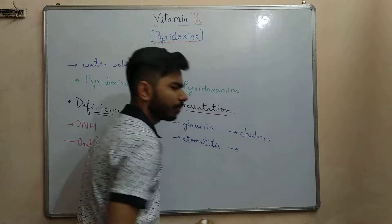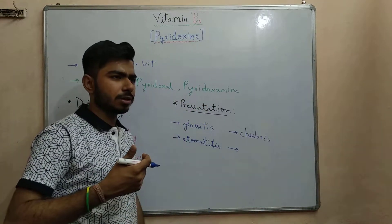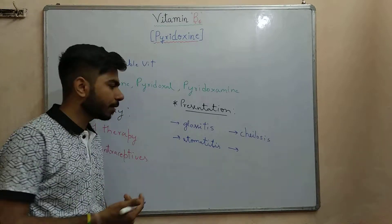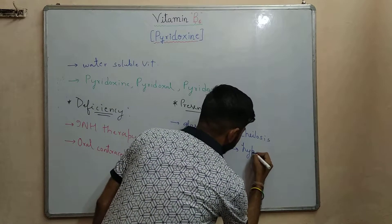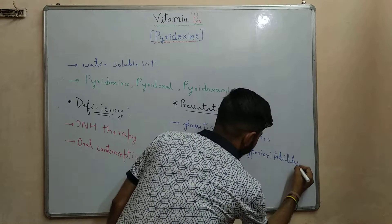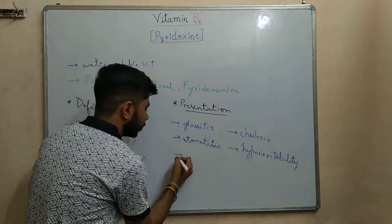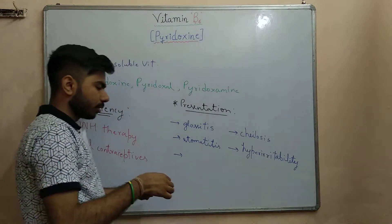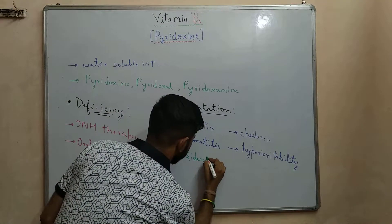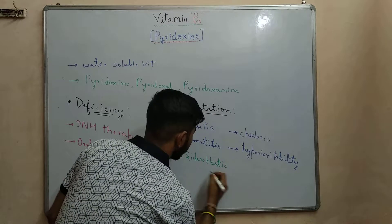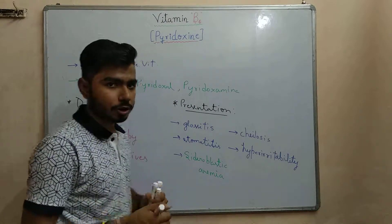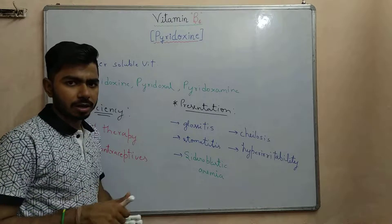The patient can also be seen as irritated — they will not be interested in answering your questions, and they will not be showing interest in whatever you are asking. So hyper-irritability will be present. There is also a special kind of anemia that can be seen — this is sideroblastic anemia mainly, in which ring-shaped RBCs can be seen.